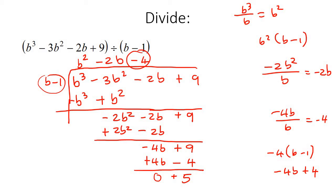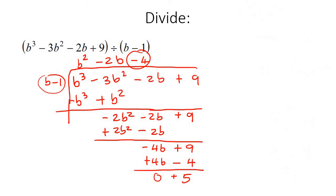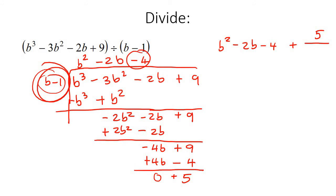The way that you write your final answer is by putting the quotient at the top: b squared take away 2b minus 4. Then you say plus, and the remainder was 5, so plus 5 over b take away 1.